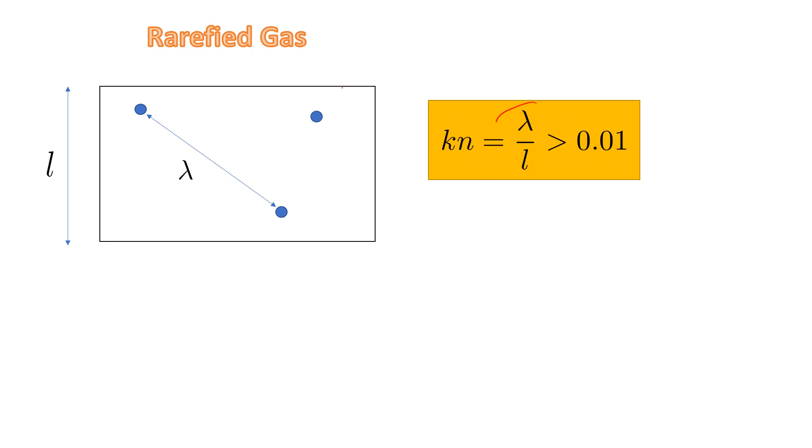So what is a rarefied gas? In a rarefied gas, Knudsen number will be greater than 0.01. You can see in this rarefied gas model, lambda is of comparable value as that of L. So if lambda by L is greater than 0.01, continuum idealization cannot be taken and rarefied gas approach needs to be taken.